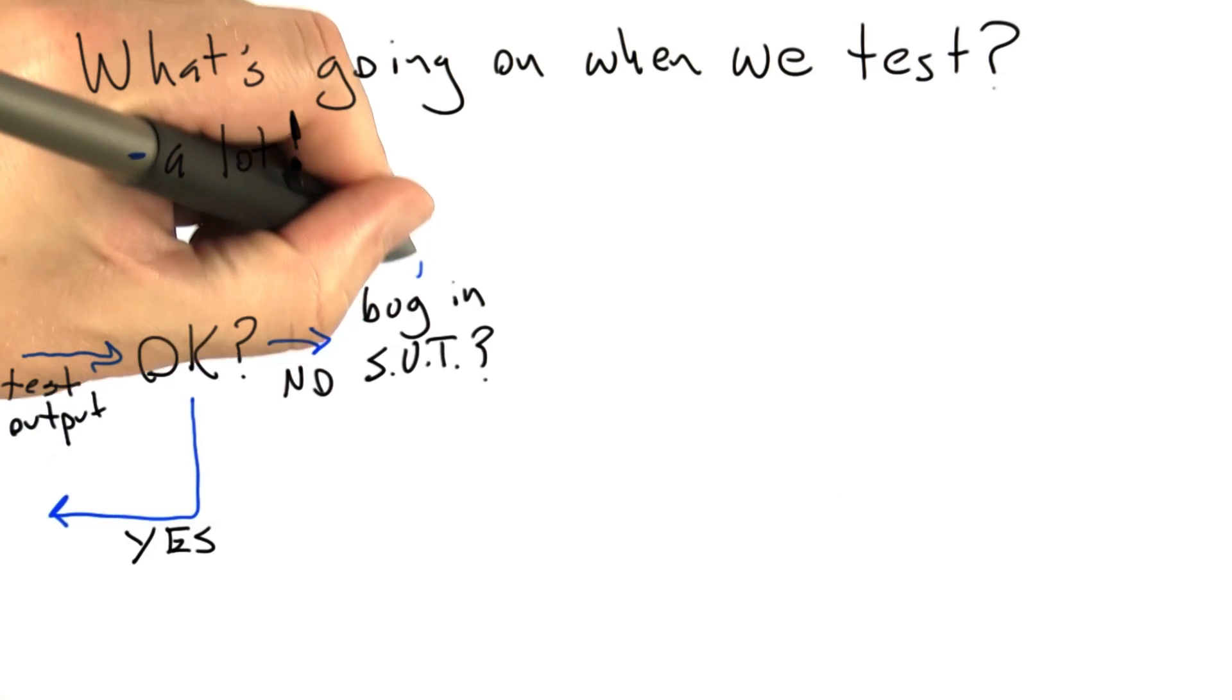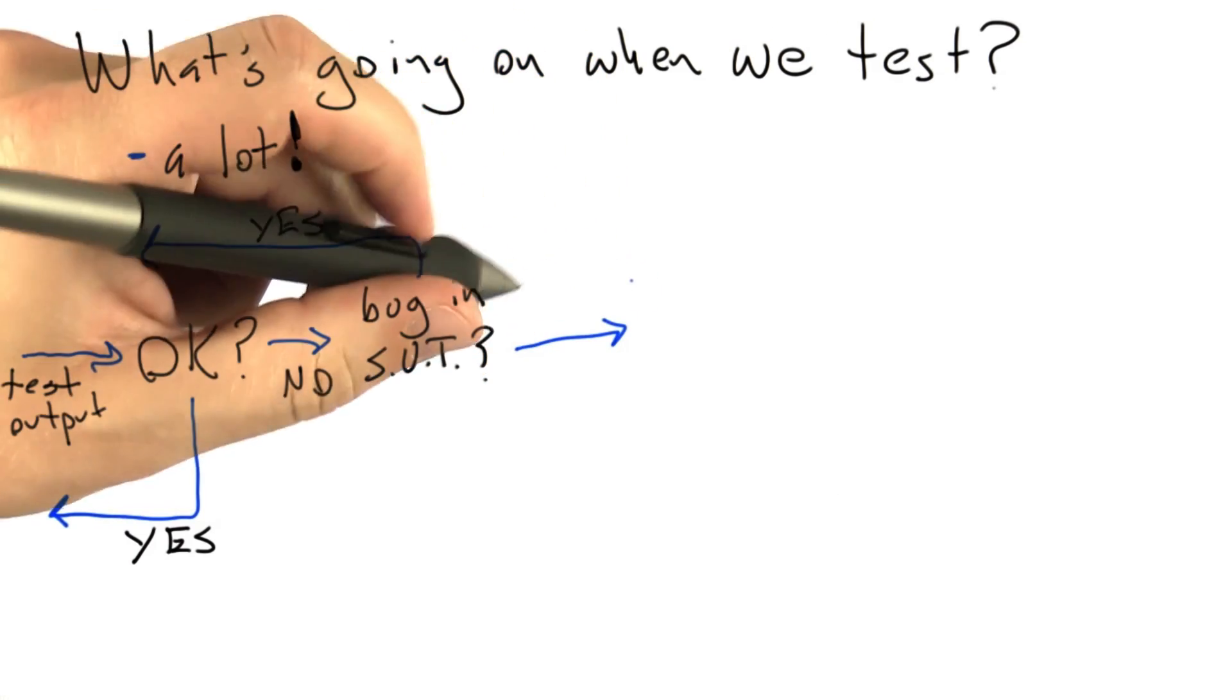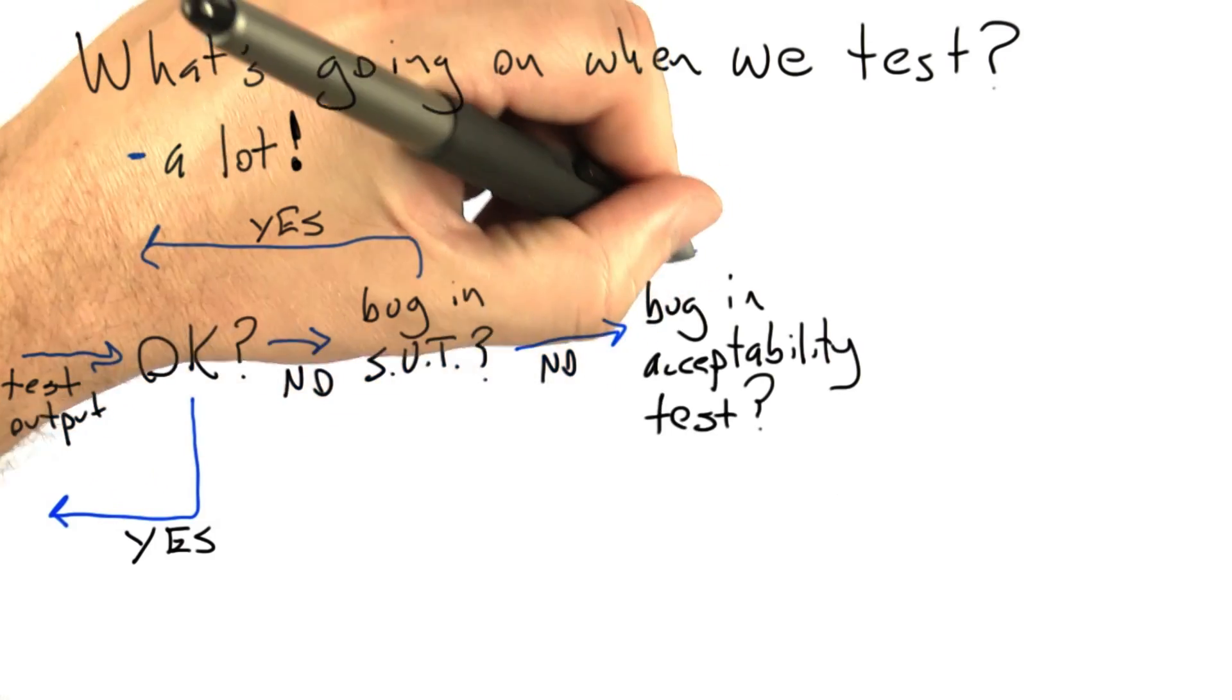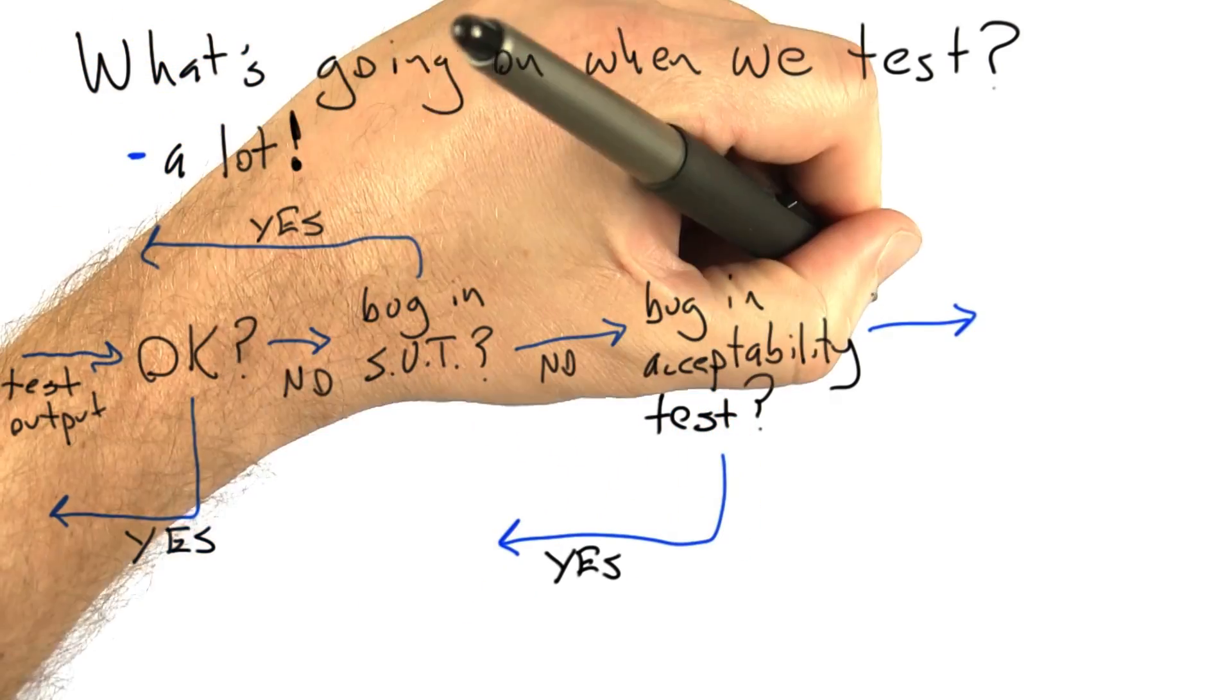If that's the case, we're going to go fix it. And if not, there's still plenty of other possibilities. One of the main ones is a bug in our acceptability check. If so, we're going to fix it.